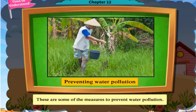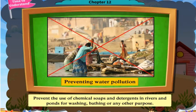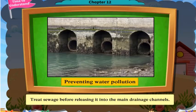These are some of the measures to prevent water pollution. Reduce the usage of chemical fertilizers for farming. Prevent the use of chemical soaps and detergents in rivers and ponds for washing, bathing, or any other purpose. Treat sewage before releasing it into the main drainage channels.